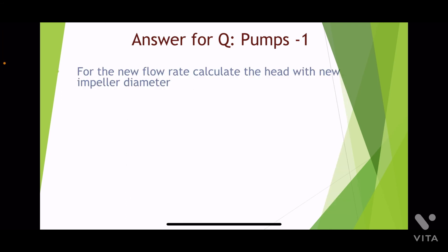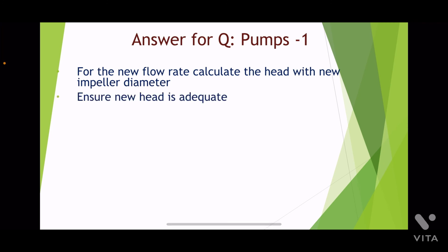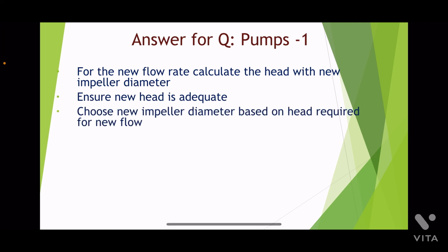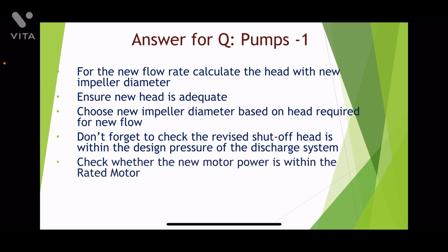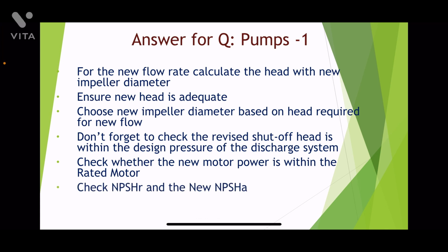The idea is: first, for the new flow rate, calculate the head with the new impeller diameter. Ensure that the new head is adequate. Choose the new impeller diameter based on the head required for the new flow. Don't forget to check that the revised shutoff head is within the design pressure of the discharge system. Check whether the new motor power is within the rated motor power. Also check the new NPSH-R and the new NPSH available.